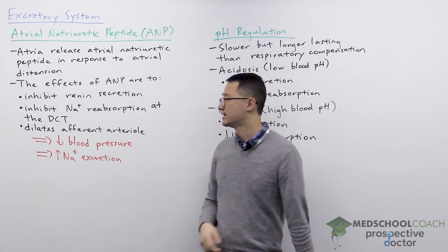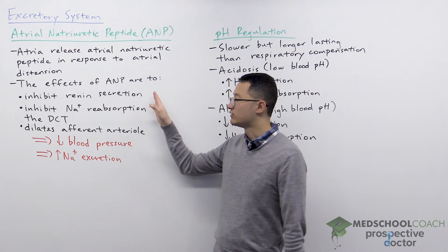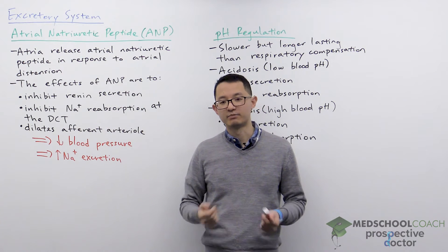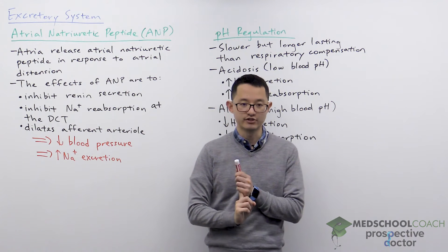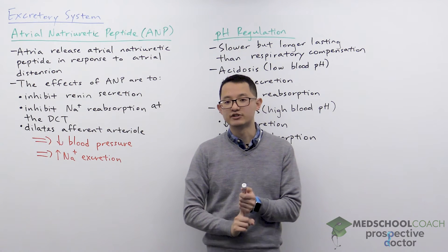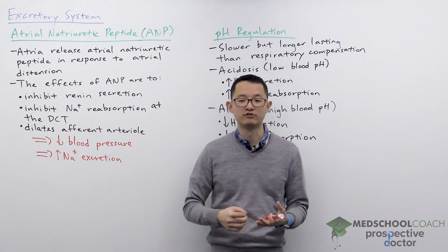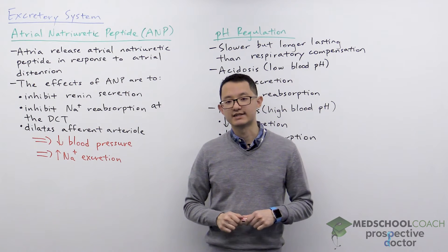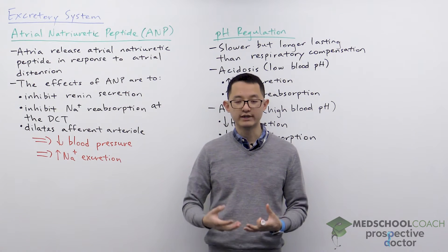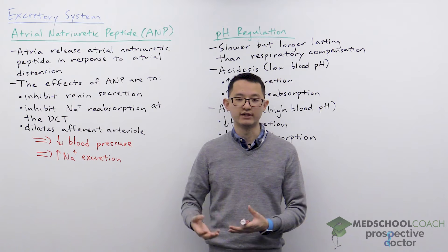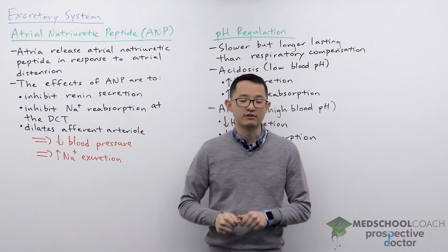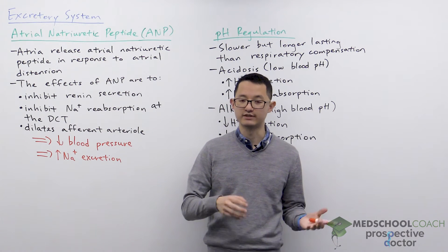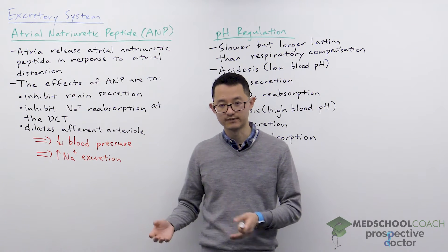ANP has several effects. The first is to inhibit renin secretion. This is going to prevent the production of angiotensin 2 and reduce the production of aldosterone as well as ADH. This means that more fluid is going to be excreted as urine, and also less sodium will be reabsorbed, which means more sodium gets secreted.